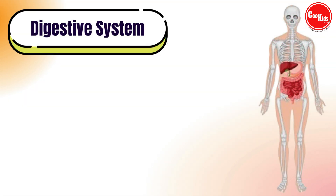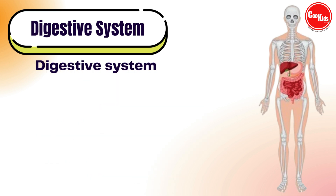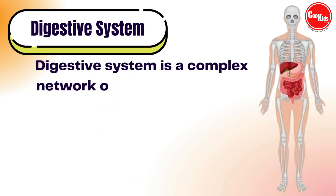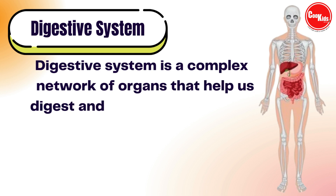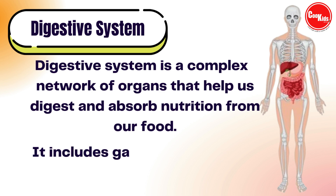Now comes the digestive system. We need food to fuel our bodies for energy, growth, and repair. The digestive system converts the foods we eat into small and simplest forms like glucose, amino acids, or fatty acids. The broken-down food is then absorbed into the bloodstream from the small intestine, and nutrients are carried to each cell in the body. It includes the gastrointestinal tract and biliary system.